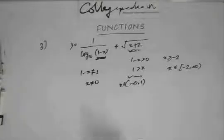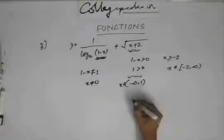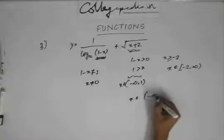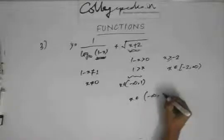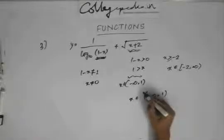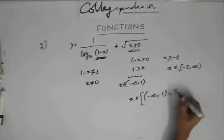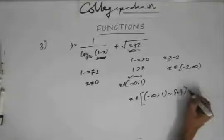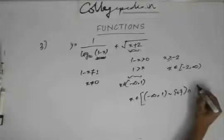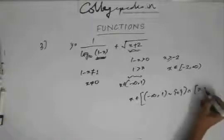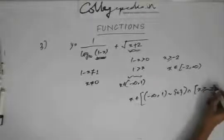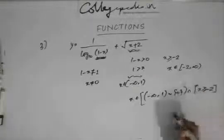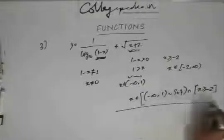So my answer is x belongs to minus infinity to 1, excluding 0, union x greater than minus 2. So this is the solution.